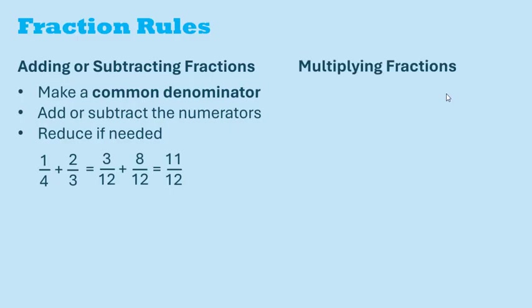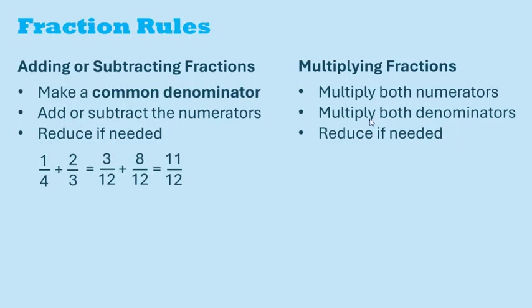For multiplying fractions, we multiply the numerators, multiply the denominators, and reduce if needed. So for example, we'd have 1 times 2 for the numerator, and 4 times 3 gives us 12 for the denominator. This reduces down to 1 sixth.